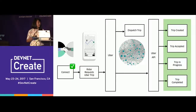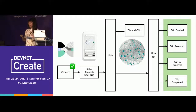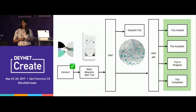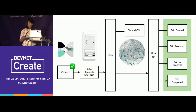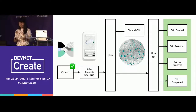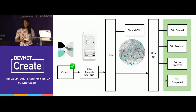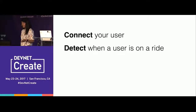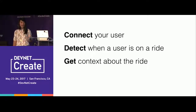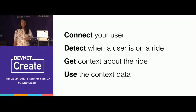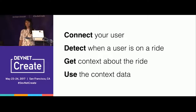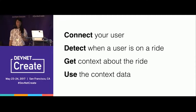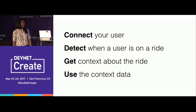It's worth noting that this is very powerful context data that tells you the user's intent — the intent is to go somewhere, maybe the airport, maybe a restaurant. There's a very strong intent of travel, and you can use that to make your interfaces smarter. There are four steps to creating a trip experience: connecting your user, detecting when that user is on a ride, getting context or more information about that ride, and then using that information to do something for the user or change the world around the rider.